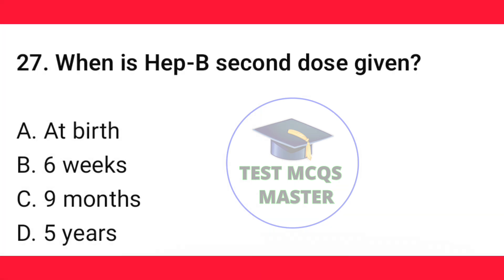Question number 27. When is hepatitis B second dose given? The correct option is B — six weeks.